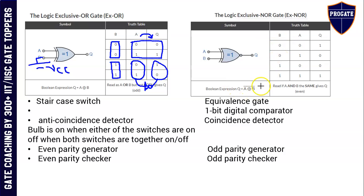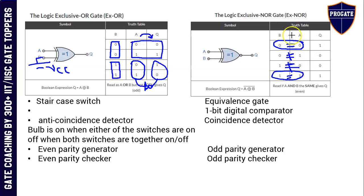XNOR gate: A exclusive OR B, whole bar. If you pass the output of the XOR gate through a NOT gate, it is the XNOR gate — XOR plus NOT is XNOR, exclusive NOR. The expression is A exclusive OR B, whole bar. If we see the truth table, whenever the inputs are the same, the output is high; if inputs are not equal, then output is 0. Hence it is called an equivalence detector. It is also called a one-bit digital comparator, a coincidence detector, and an odd parity checker and odd parity generator.